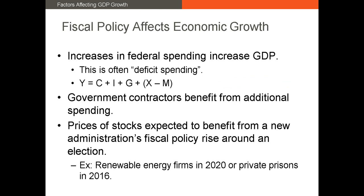Fiscal policy can also impact GDP growth. Increases in federal spending increase the G portion of the GDP formula — GDP equals consumer spending plus investment plus government spending plus net exports. So an increase in fiscal spending increases G, thus increasing overall GDP. The way in which the government increases spending can have a disparate effect on certain industries.